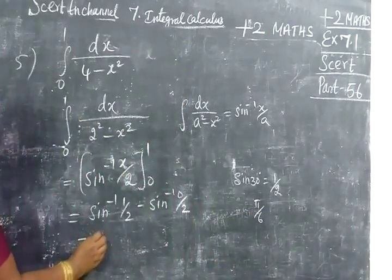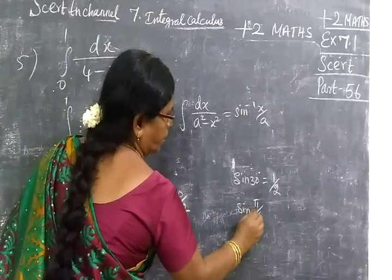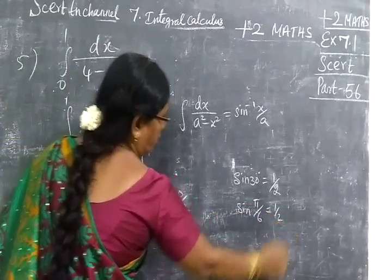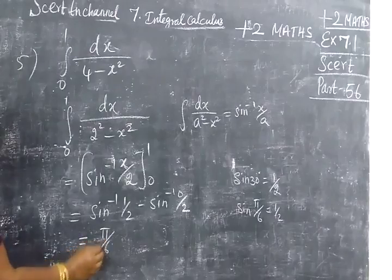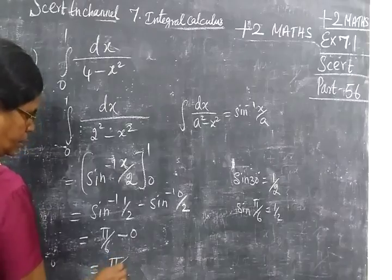So you are writing π by 6. Here sin π by 6 equal to half you are writing. Given this is 0, so I equal to π by 6.